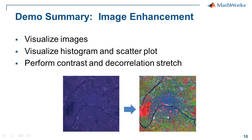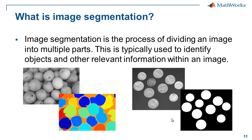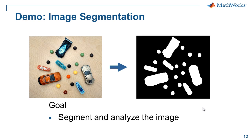This takes us to our next subject: image segmentation. Image segmentation is simply the process of dividing an image into multiple parts — typically a foreground and a background. This is used to identify and isolate objects so you can use other functions to extract meaningful information. For example, watershed segmentation can isolate and count objects in a densely packed image, or segment a coin image into a binary image to count money based on size. We'll segment our toy cars, candy, and hex bug image, turn it into a binary image, and extract statistical information.